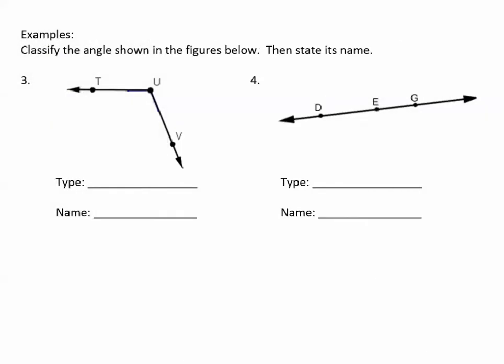Let's take a look at some examples. Classify the angle shown in the figures below. Then state its name. So remember, classify means tell what type of angle is shown. So this is an angle. I can get my square to put in the interior of the angle, line it up along one side, make it touch the vertex, and notice the other side opens wider than the corner of the square. So because it's larger than 90 degrees, but not yet 180 degrees or a straight line, we know that this is an obtuse angle.